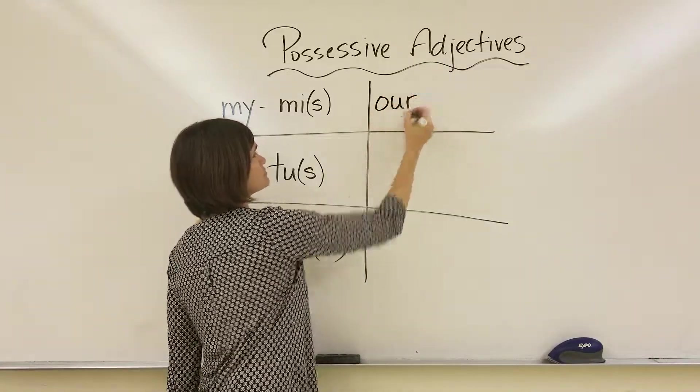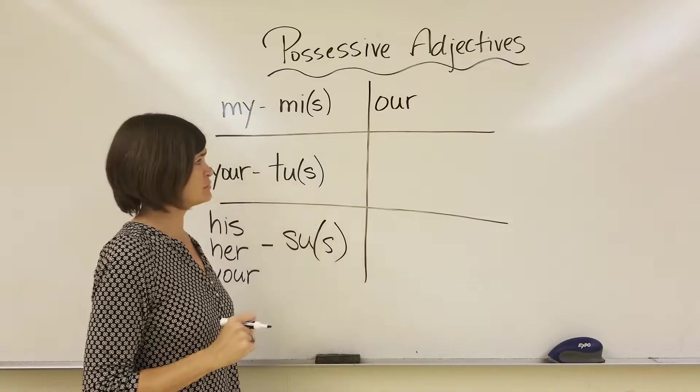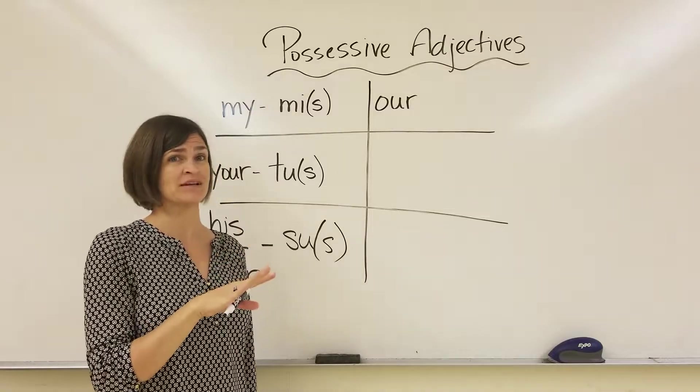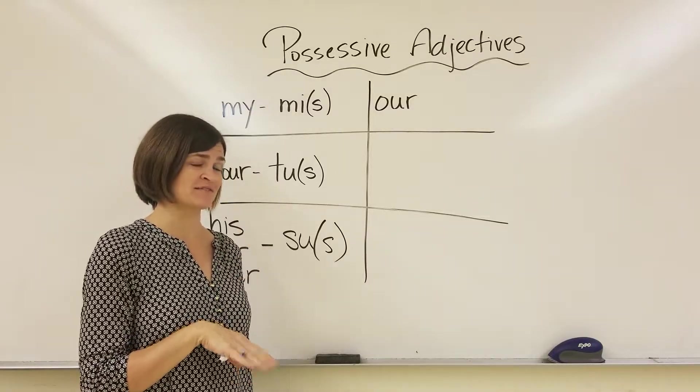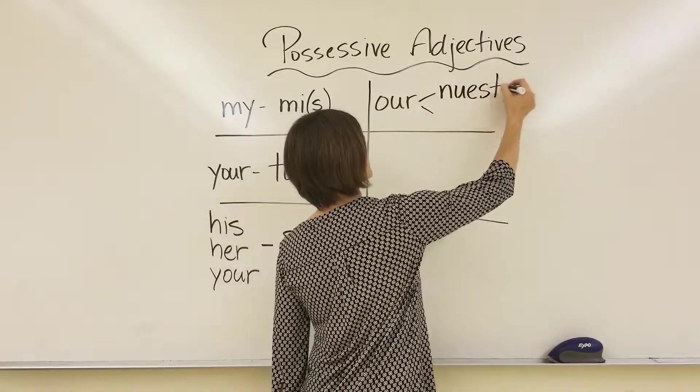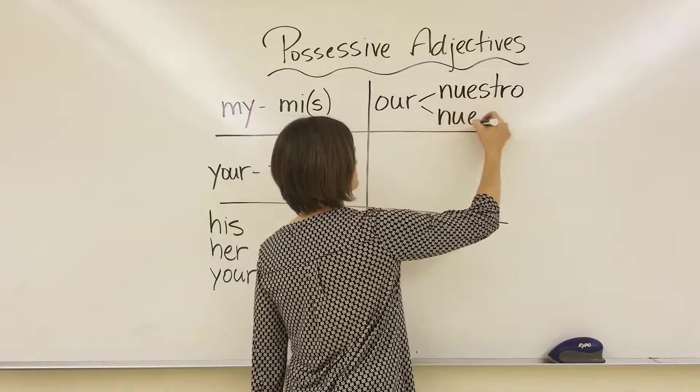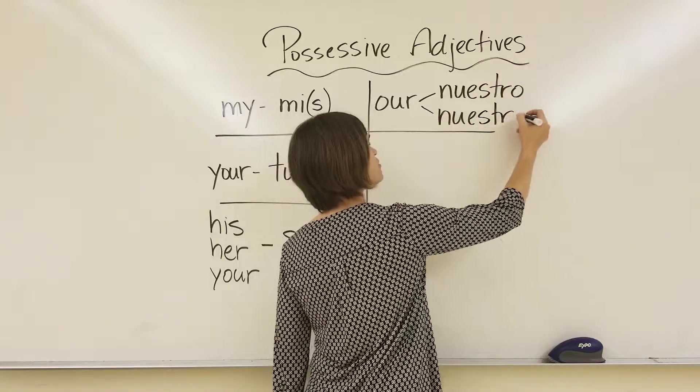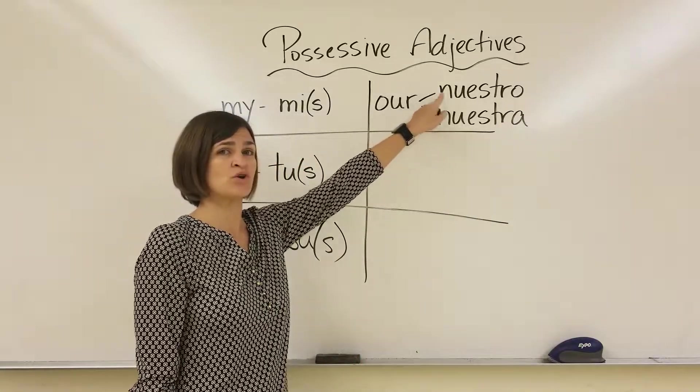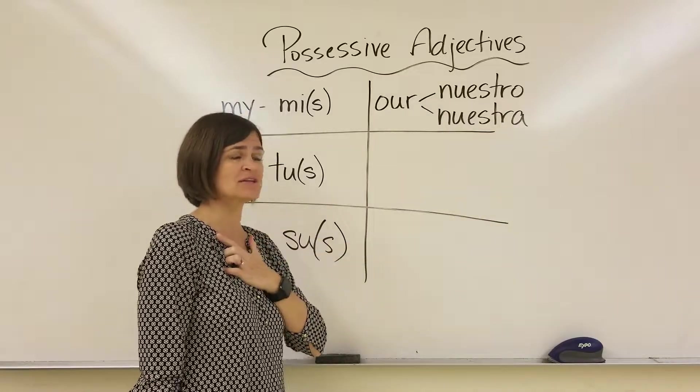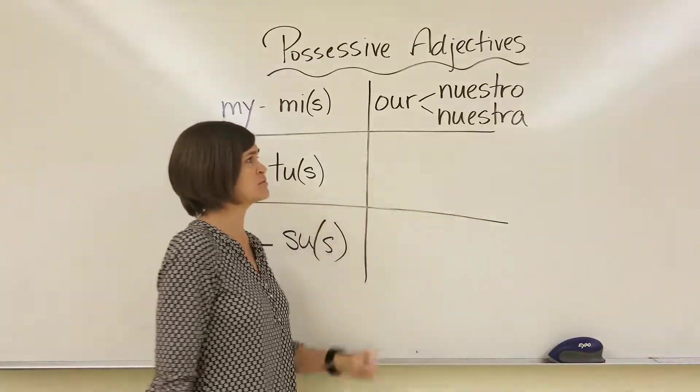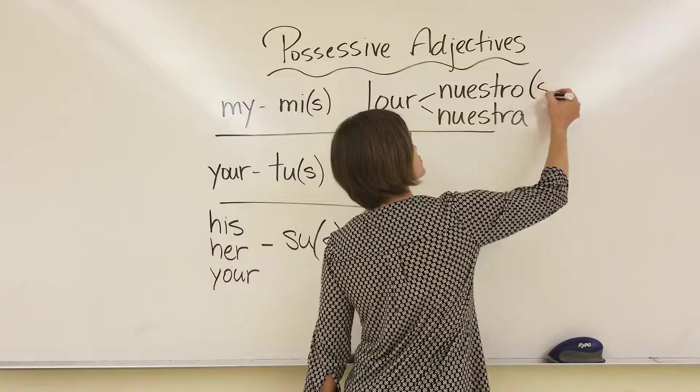Our, there's two options for this one. There's a masculine and a feminine option. I'll write these while the bell rings, ending zero period. So if our object that we own is masculine, like our dog, it would be nuestro perro. It doesn't have anything to do with us or whether we are masculine or feminine. It's based on the thing that follows. It's based on the object that we possess. And of course, these can also be plural.